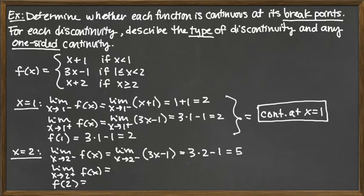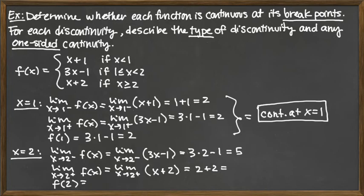For the right-hand limit, values of x slightly bigger than 2 correspond to the bottom piece, which is x plus 2. Plugging in gives 4. For the function value, the interval 'x greater than or equal to 2' tells us to plug x equals 2 into the bottom piece: 2 plus 2 equals 4.